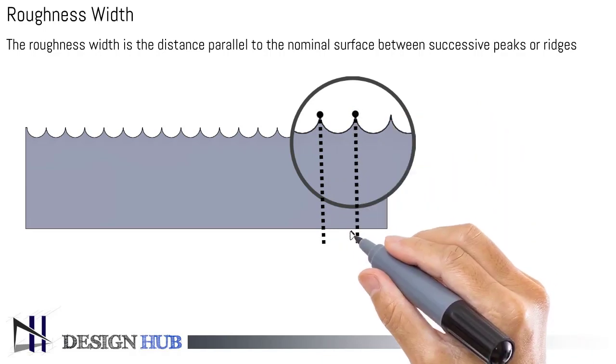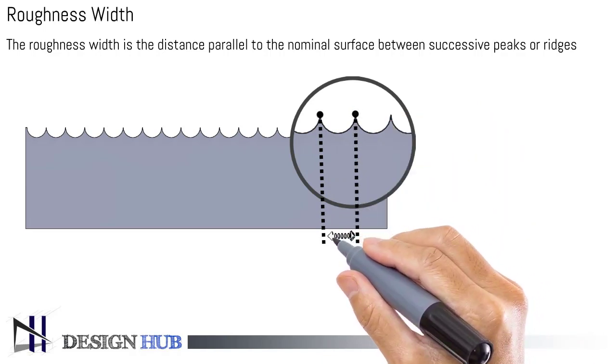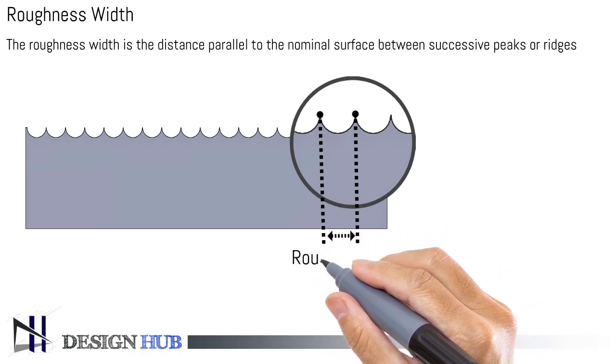Roughness width is the distance parallel to the nominal surface between successive peaks or ridges.